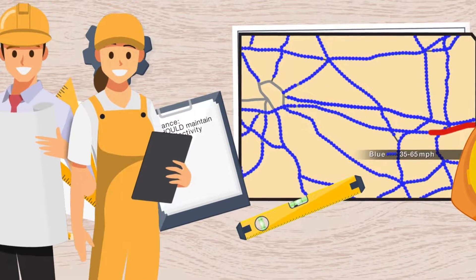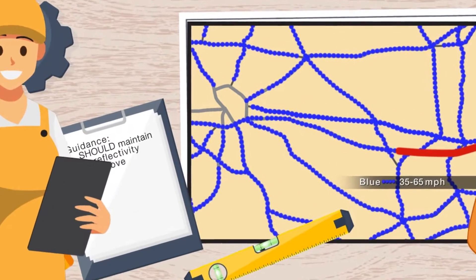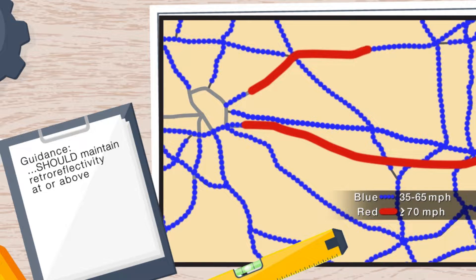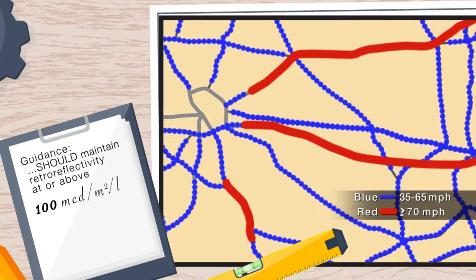On roadways with speed limits of 70 miles per hour or greater, the MUTCD now recommends agencies use the method to maintain these same lines to a higher retro-reflectivity level of 100 millicandelas per meter squared per lux.